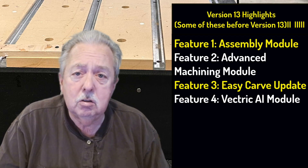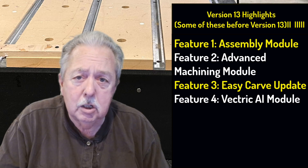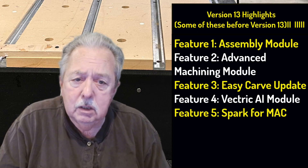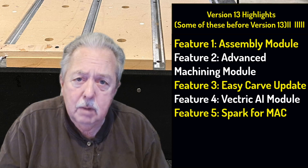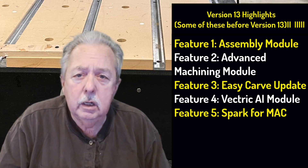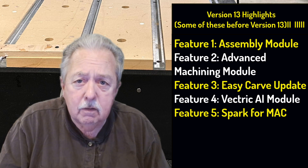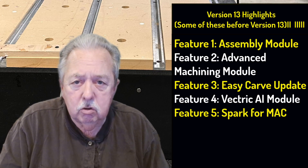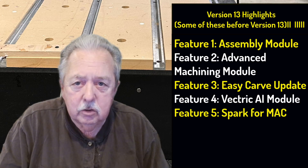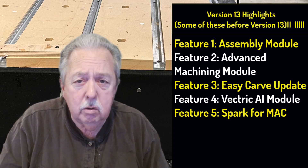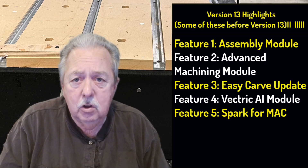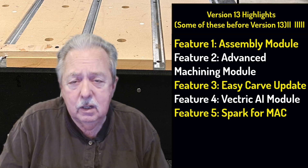Number four, and this is the one that's pretty exciting to me, is the Vectric AI module. They've developed their own AI module, and it will be coming out in the near future. The fifth item is they've developed a new product called Spark for Mac. If you're a Mac user who's been waiting for software that runs native to the Mac, they are going to have a version of that. However, if you're a VCarve or Aspire user running Parallels, this is not going to be the product you want.